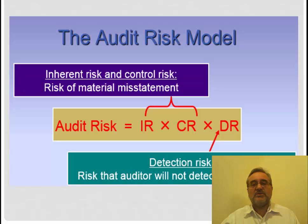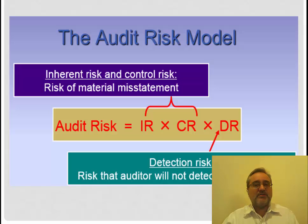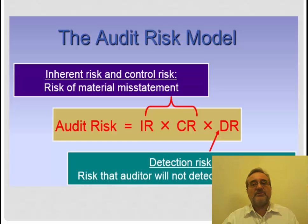The testing for inherent risk and control risk measures the risk of material misstatement, but does not directly test for materiality. The testing for materiality is our substantive testing. The nature, timing, and extent of our substantive testing is based upon our determination of the risk of material misstatement.